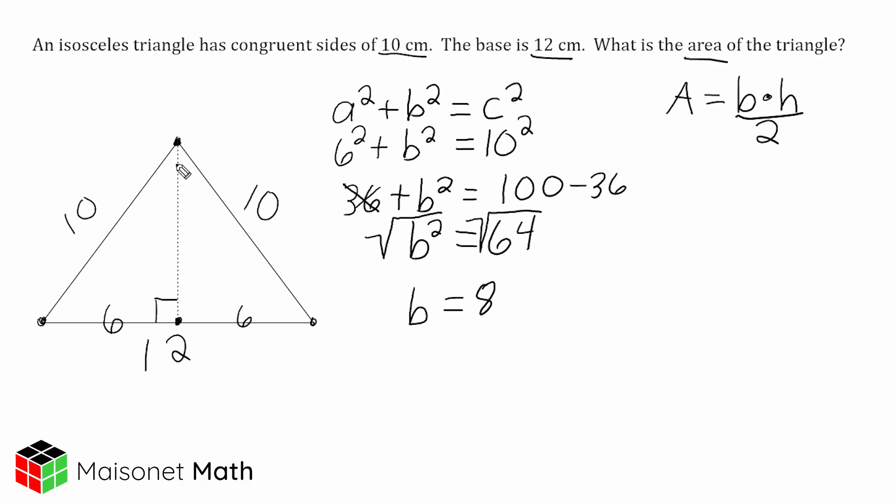So now we know that the length of this height is 8 centimeters. Now what we can do is go over here to our area formula and we can plug in the length of the original base of the entire triangle, which is 12, multiply that by our height, which we just determined is 8, and then divide that by 2.